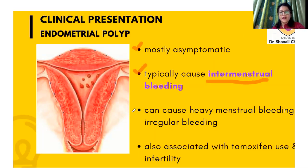They can also cause heavy menstrual bleeding, irregular bleeding, and they are also associated with tamoxifen use and infertility.